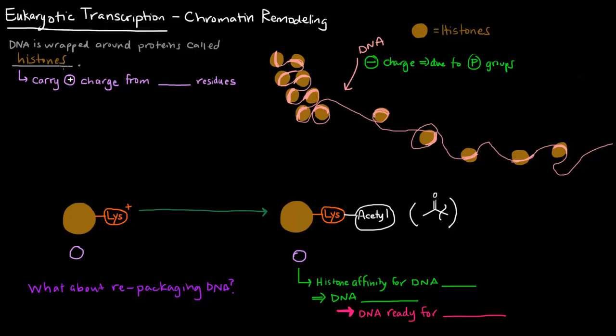Now, these histones are proteins, and proteins are made up of long chains of amino acids. So these positive charges are coming from some sort of amino acid. The amino acids that have positive charges are the basic ones: histidine, arginine, and lysine.